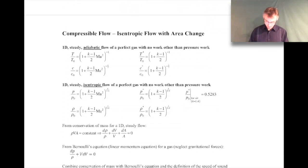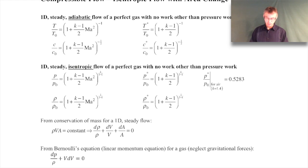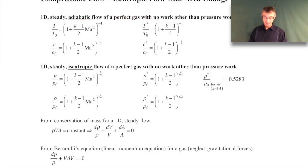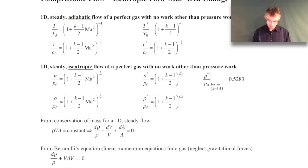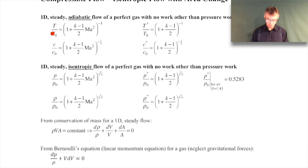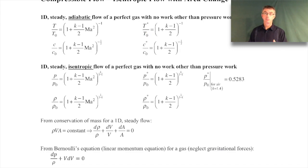Let's do a quick review of what we did in the last lecture. We derived expressions for 1D steady adiabatic flow of a perfect gas with no work other than pressure work. We got this expression for the stagnation temperature ratio as a function of Mach number - this is the temperature at that Mach number, and if you brought the flow to rest, this is the stagnation temperature you would get. Similarly, if you go to sonic conditions (Mach number of 1), you get the T* value.